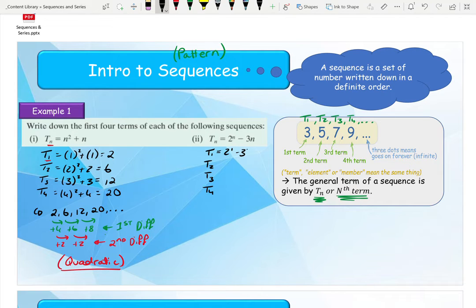So we have 2 to the power of 1 minus 3 by 1, which gives me minus 1. We have 2 to the power of 2 minus 3 by 2, which gives me minus 2. We have 2 to the power of 3 minus 3 by 3, which gives me minus 1 again. And we have 2 to the power of 4 minus 3 by 4, which gives me 4.